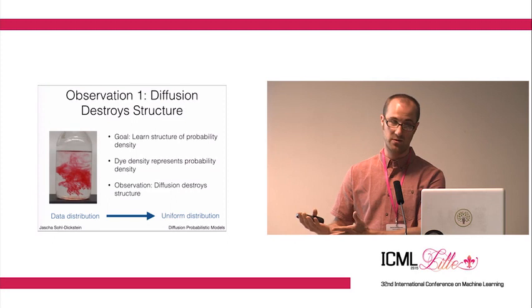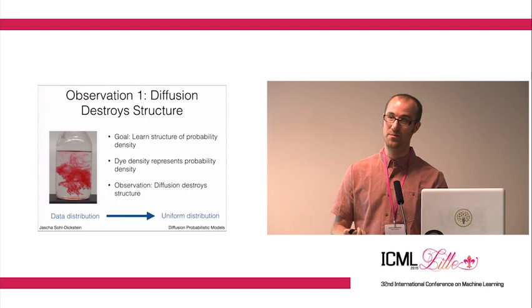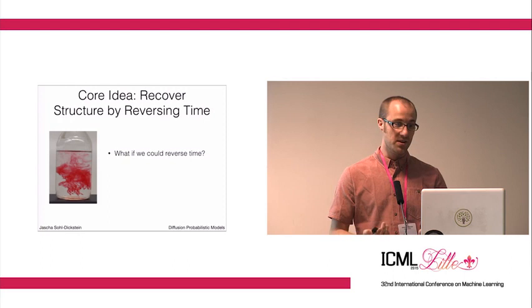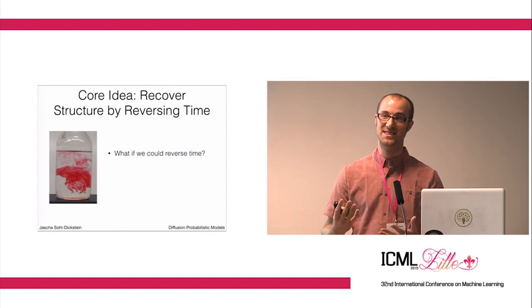It's not immediately obvious why this is useful to us. But as a thought experiment, imagine what you could do if you could reverse time. If you could start from a uniform distribution and somehow run this diffusion process backwards, then you would be able to recover your data distribution.